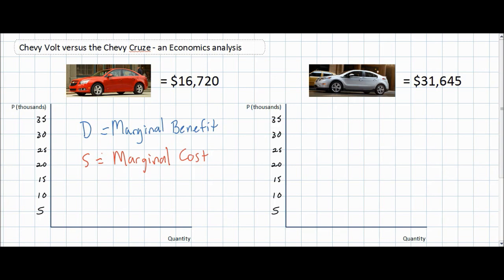Once we've considered the marginal benefit and the marginal cost for the Chevy Cruze and the Chevy Volt, we should be able to conclude why one car sells for twice as much as the other. We're going to begin by discussing the marginal benefit for the Chevy Volt.